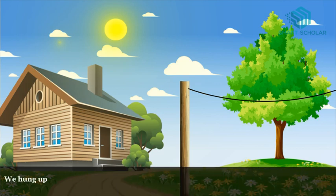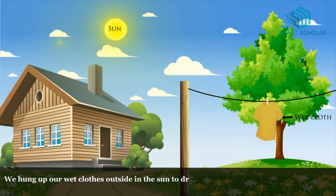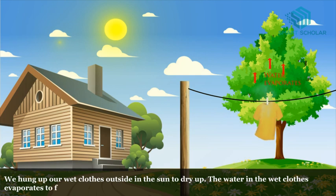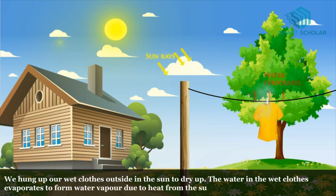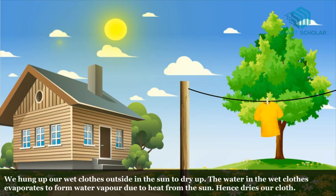We hang up our wet clothes outside in the sun to dry up. The water in the wet clothes evaporates to form water vapour due to heat from the sun, hence it dries our clothes.